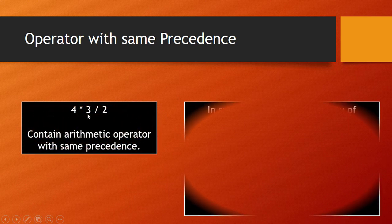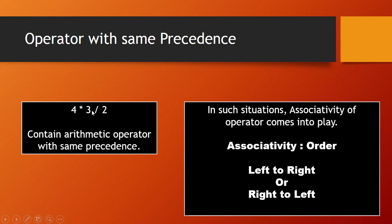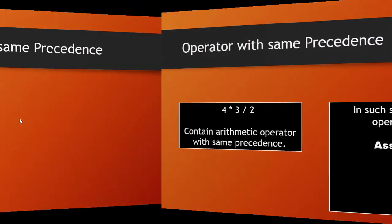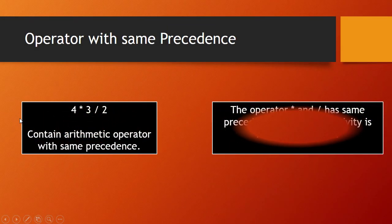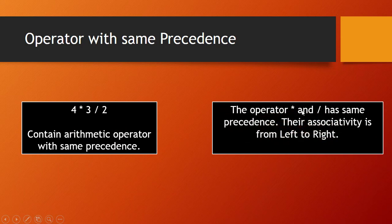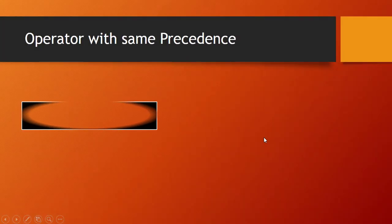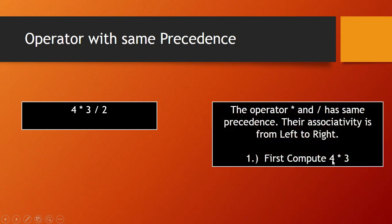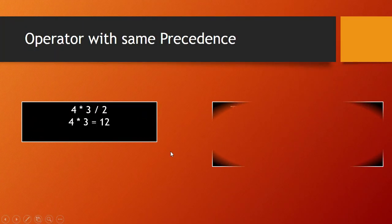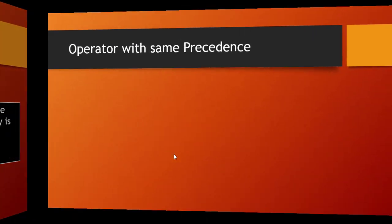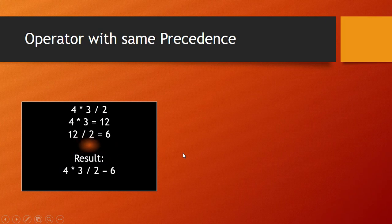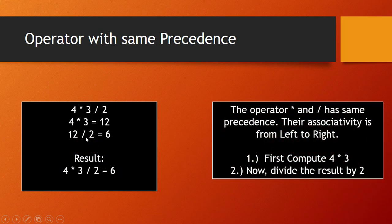Since we read left to right and on the left side we have star first, then division, we first multiply then divide the result by two. For example in 4 star 3 divided by 2: since both operators have the same precedence, we apply left-to-right associativity. First compute 4 star 3, which equals 12, then divide the result by 2.